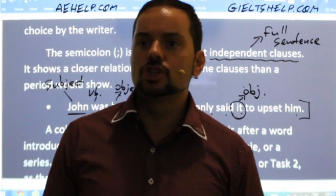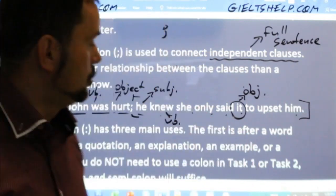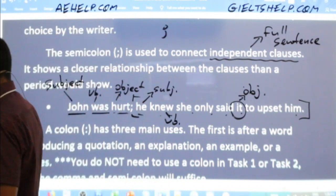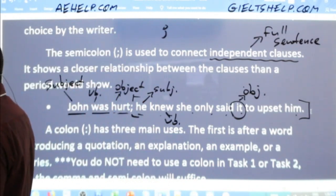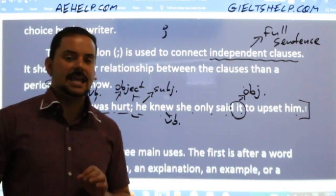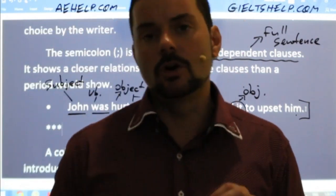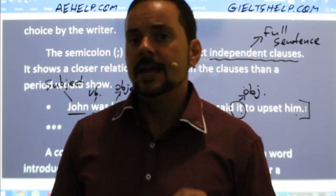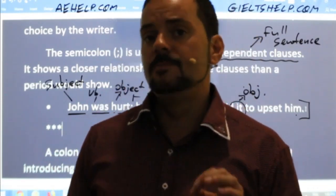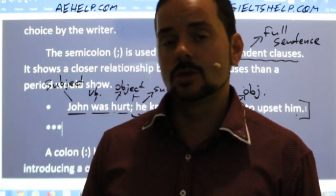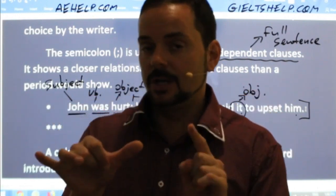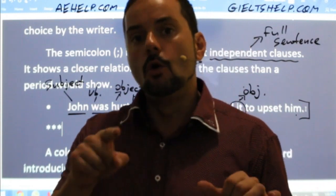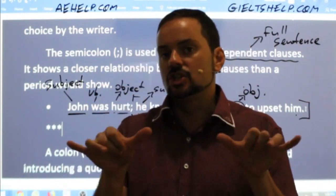Preeti asks: does the semicolon show two full sentences that are related to each other? Yes. The key is they must be strongly related. The most common mistake with the semicolon is using it when the connection is weak or neutral. If the relationship is weak, it's better to use a period — two separate sentences. If the relationship is neutral, you might use a coordinating conjunction like 'comma or' or 'comma and.'